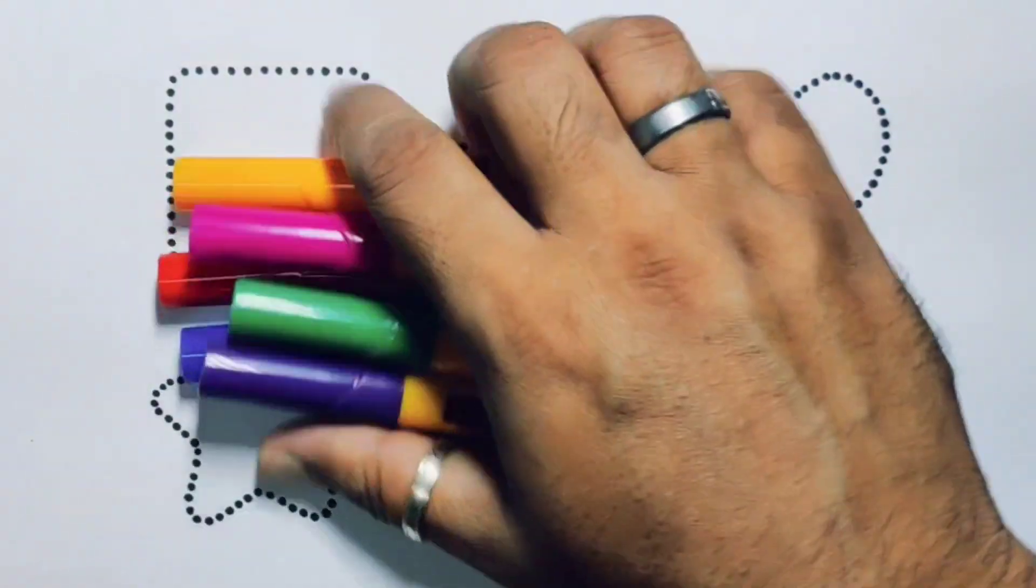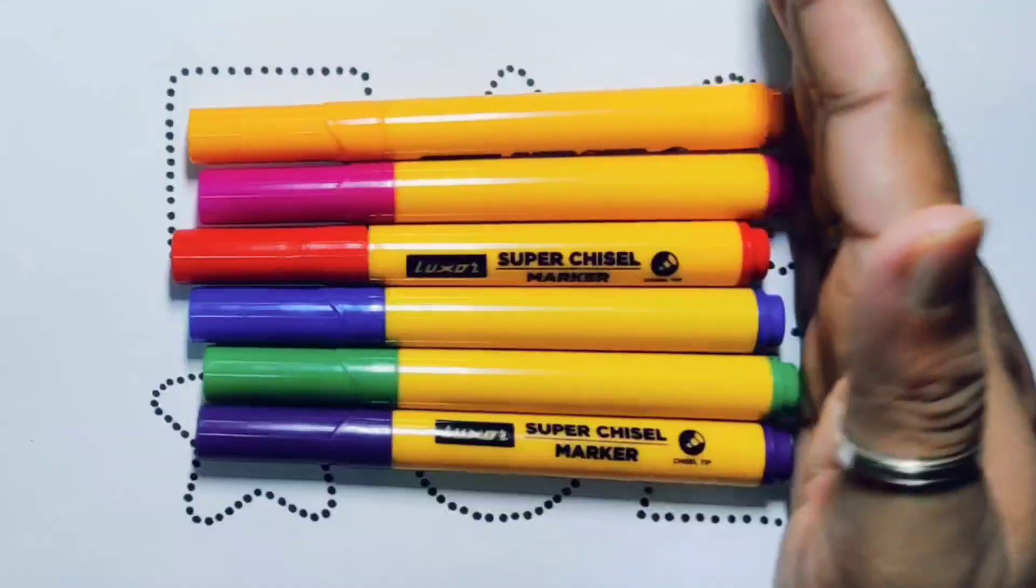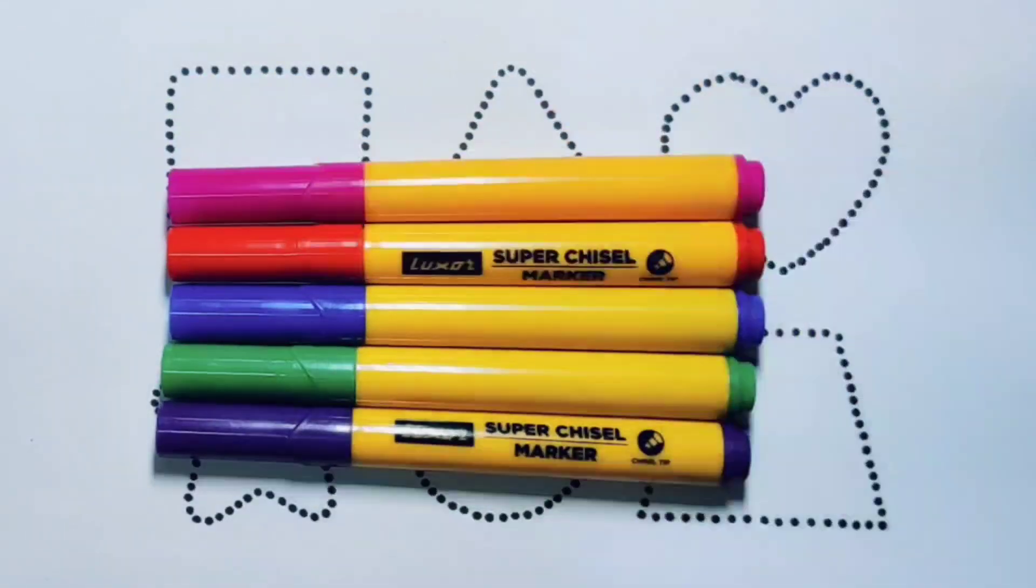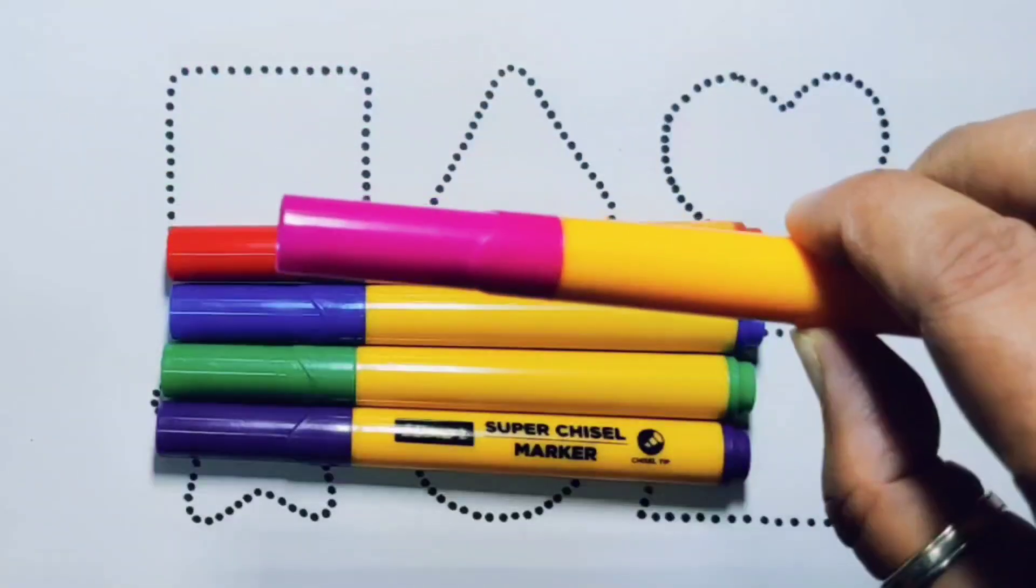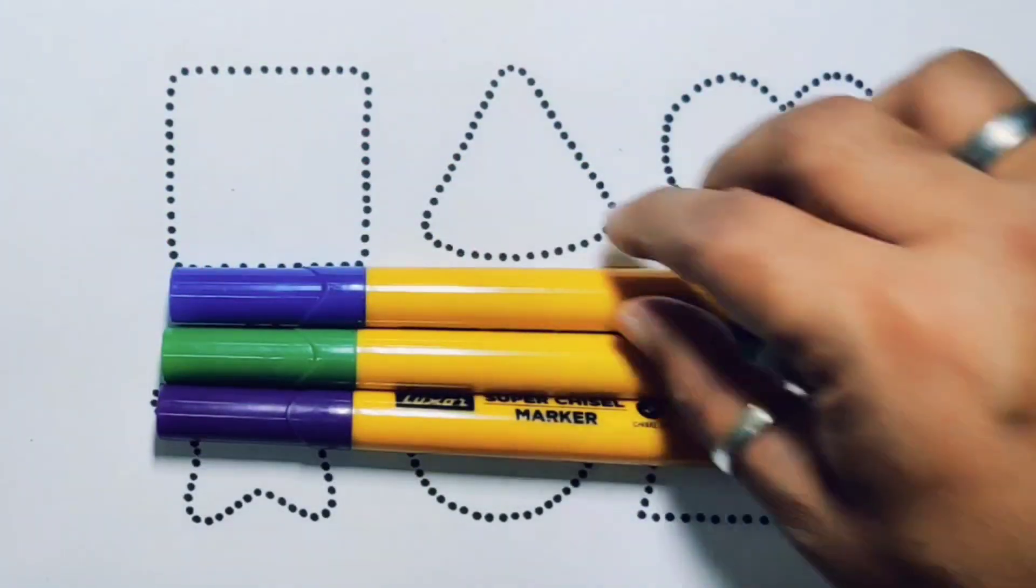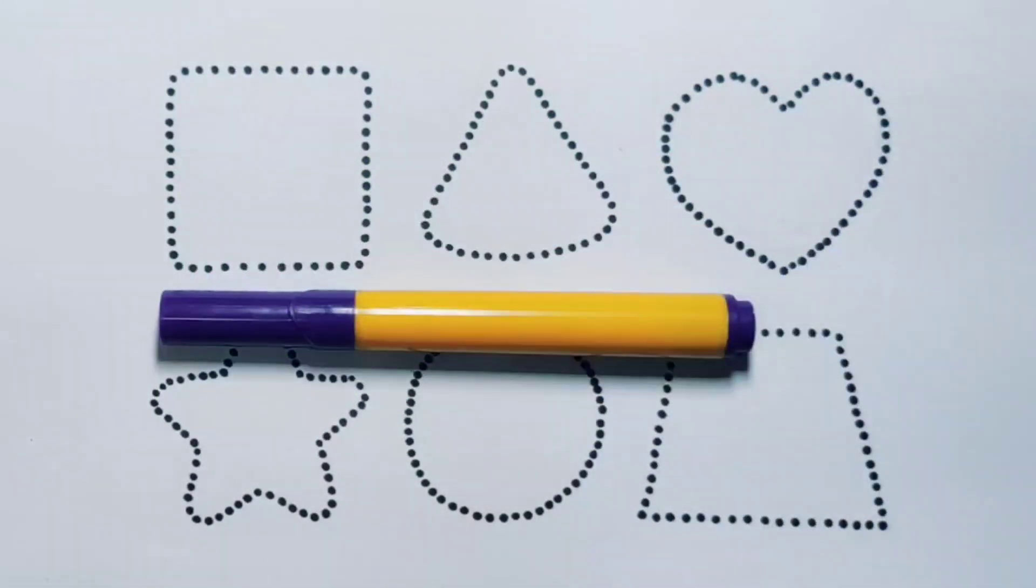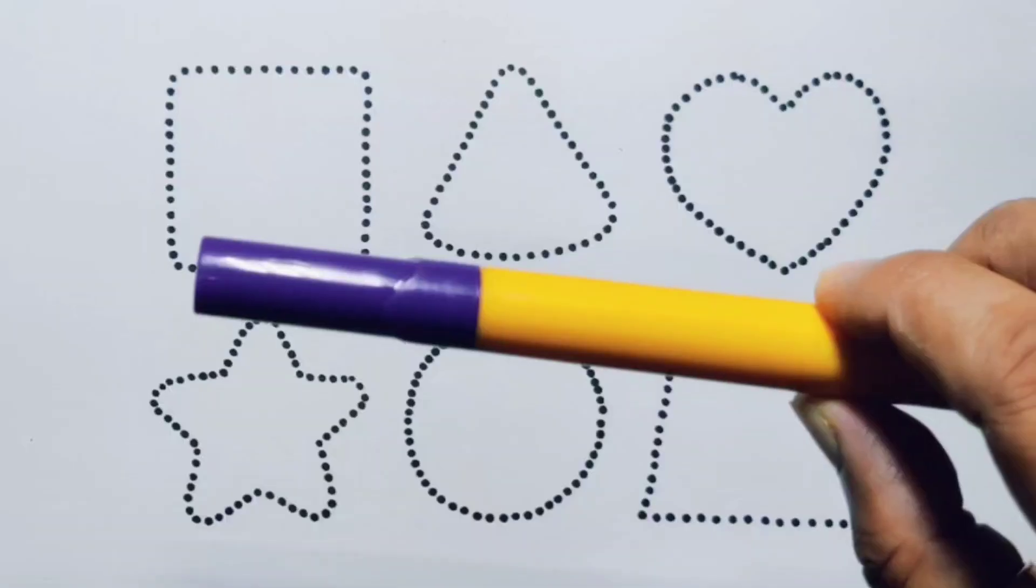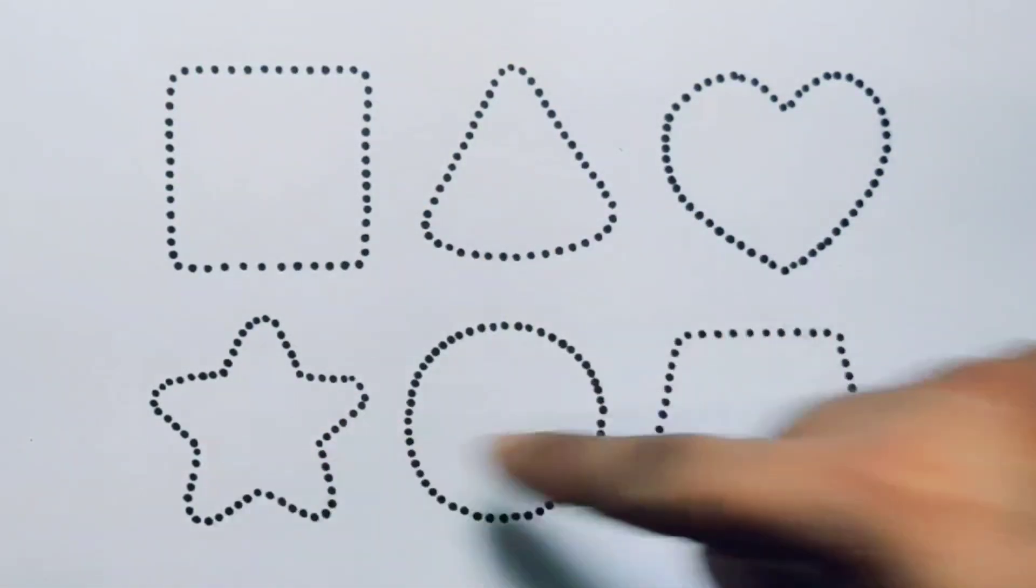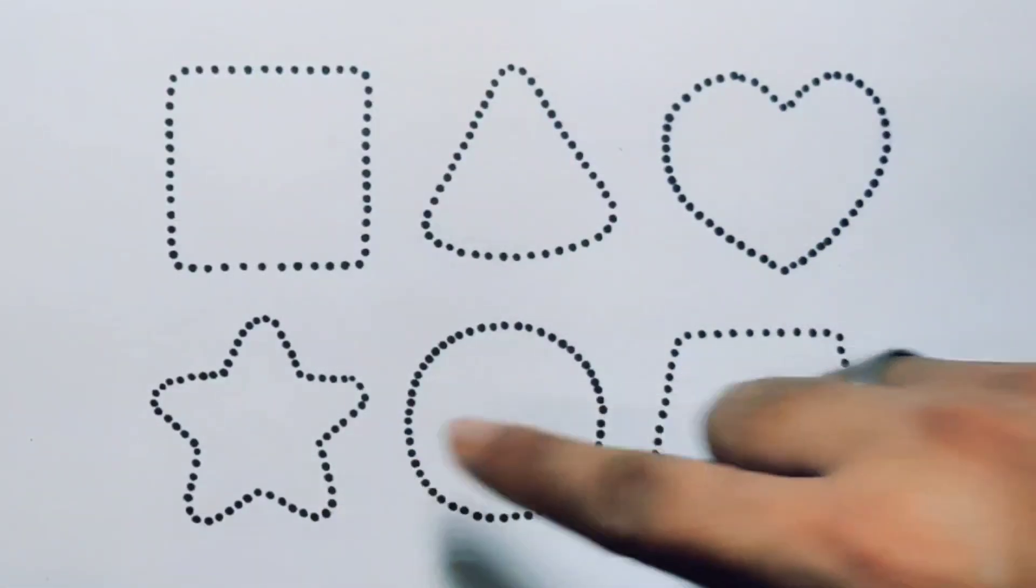Hello kids, welcome to my new video. First we're going to know the colors: orange, pink, red, blue, green, purple, and black. Now let's learn the 2D shapes: square, triangle, heart, star, circle, and trapezium.